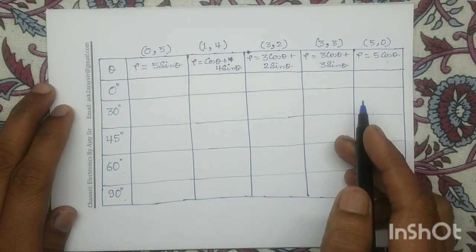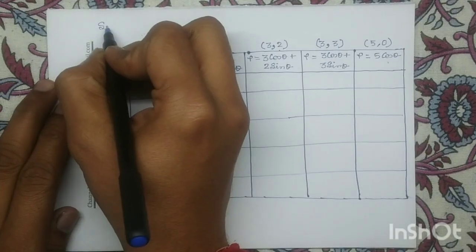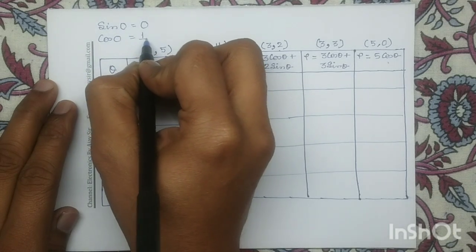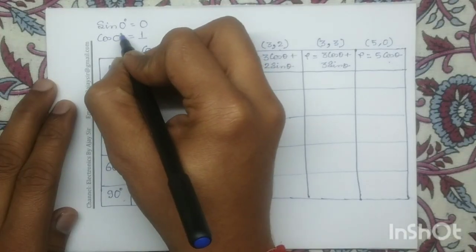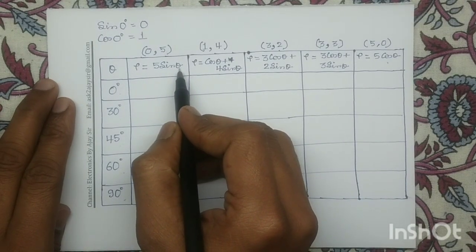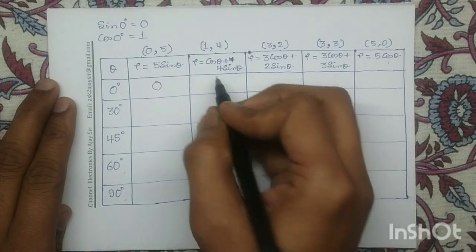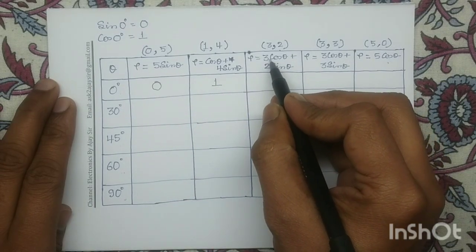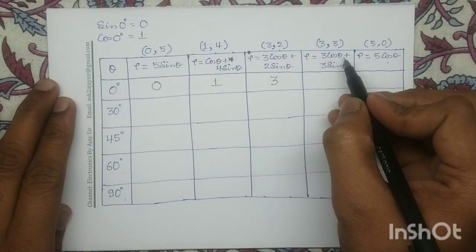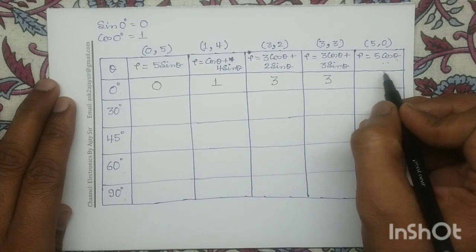For θ = 0°, sin(0°) = 0 and cos(0°) = 1. Substituting: 5·sin(0°) = 0; cos(0°) + 4·sin(0°) = 1; 3·cos(0°) + 2·sin(0°) = 3; 3·cos(0°) + 3·sin(0°) = 3; and 5·cos(0°) = 5. So the ρ values for θ = 0° are: 0, 1, 3, 3, and 5.